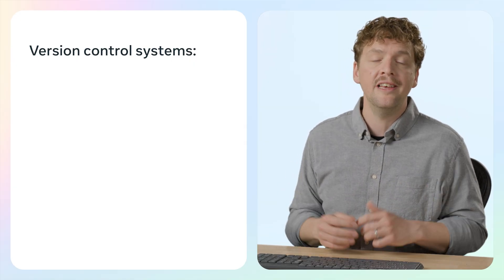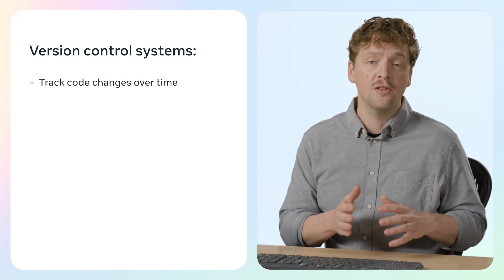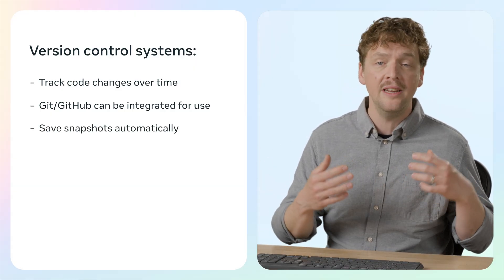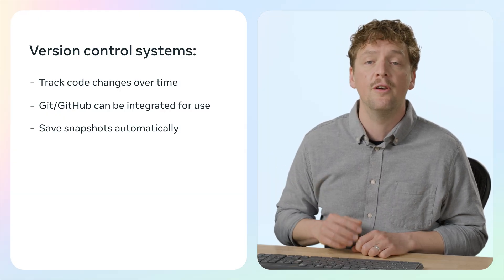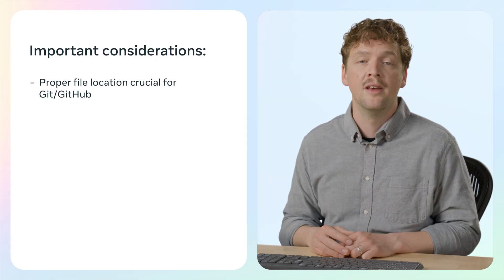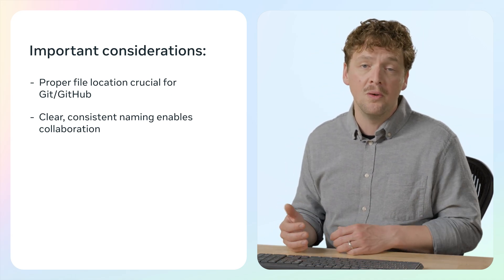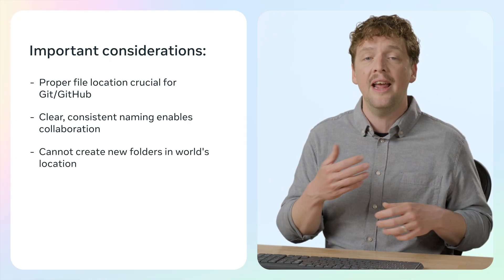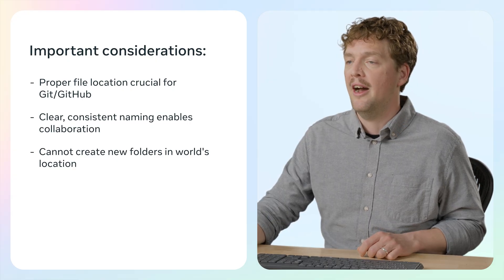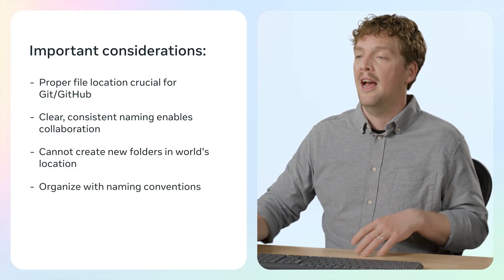Let's discuss version control — what is it and why is it important? Version control systems help track changes to your code over time. Systems like Git or GitHub can be integrated for use. Snapshots are saved automatically; however, you'll need to be very careful not to lose all your updates if you revert to a prior version. Proper file location is crucial for implementing Git or GitHub effectively. Use clear, consistent file naming conventions, as these make collaboration easier. Also, you can't create new folders inside your world's script location, so you need to make sure you're using a really good naming convention for your scripts to keep them organized.